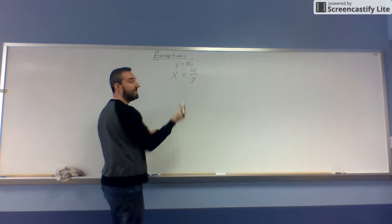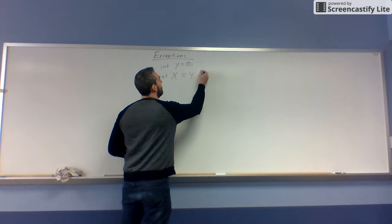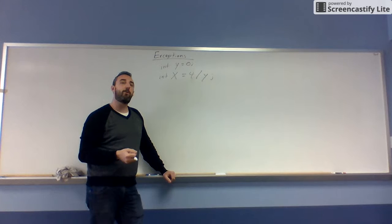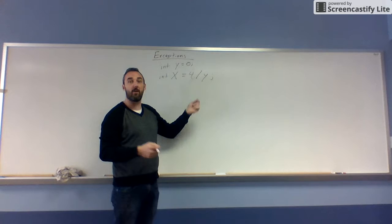But if I were to change y to a zero, we're going to have an issue. Now, let's say this is in a Java program, and I were to say y is an int and x is an int. At compile time, all the computer is going to do is say, alright, y is an int, x is an int, 4 is an int, 4 divided by y, which is an int. You can divide integers by each other, so there's no problem.